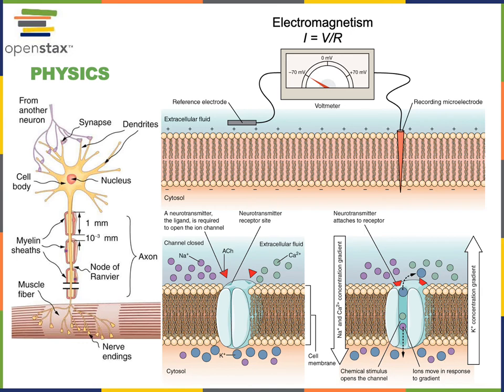Electromagnetism will be important for understanding the nervous system, the muscular system, and the functions of muscles in the cardiovascular system. We will also see applications of Ohm's law as we study the flow of blood in the cardiovascular system, as well as to describe the flow of air through the airways as we study the respiratory system.